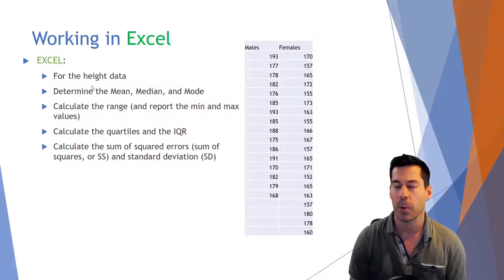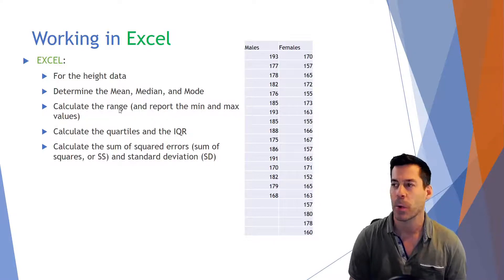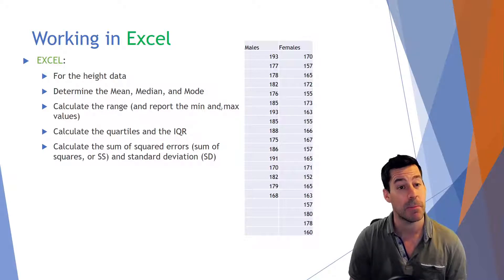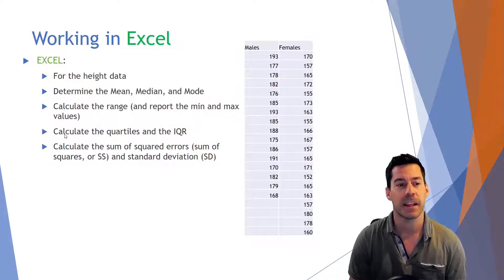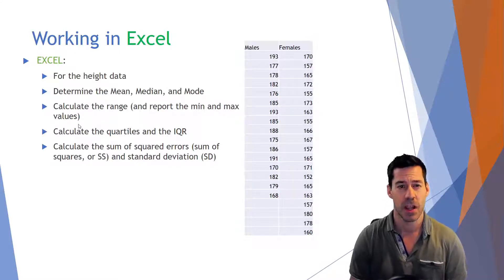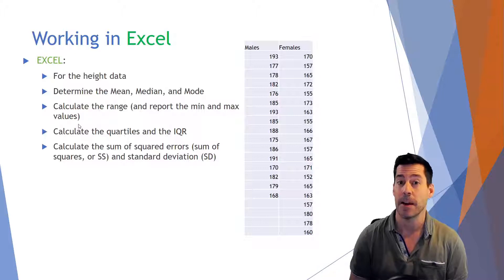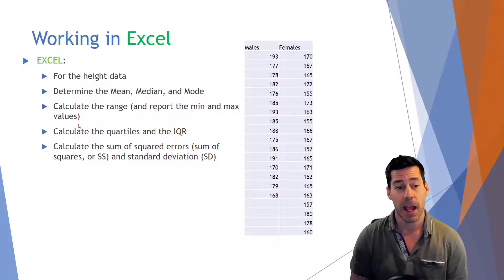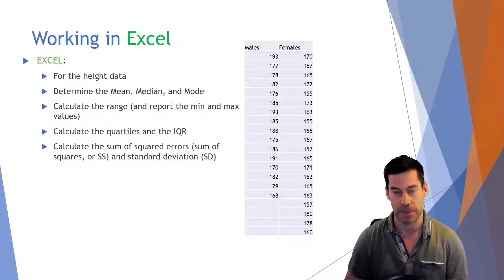So if we think about our data set that I presented here, we've got heights for both males and females. We've got those in Excel. So for the height data, we're going to determine the mean, the median, and the mode. We're going to calculate the range, reporting the minimum and maximum values as well. We're going to calculate the quartiles as well as the interquartile range.